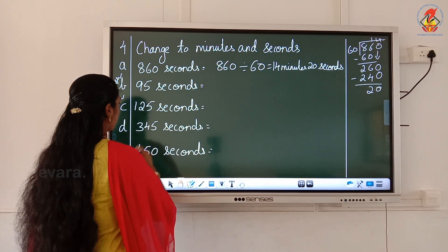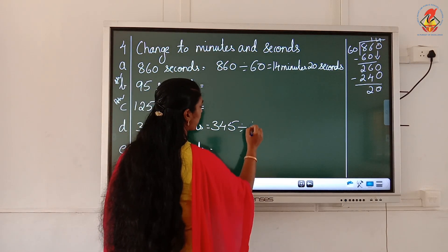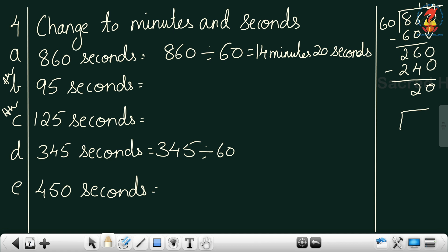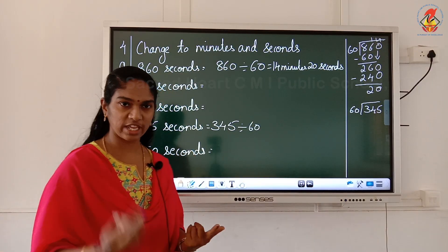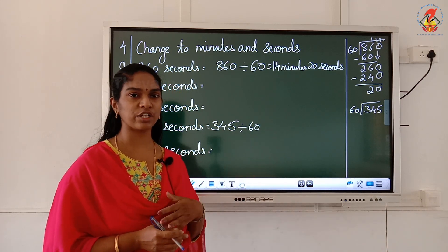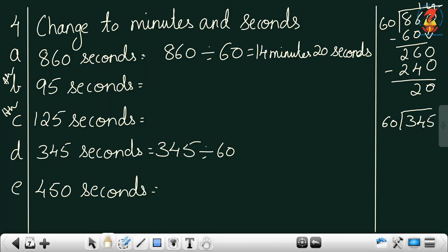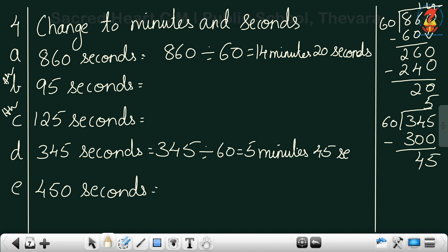Question D: 345 seconds, convert to minutes. Divide by 60. Starting with 2 digits — 34 is smaller than 60, so take the third digit: 345. From the 6 times table, find a number less than 34: 6 fives are 30, so 60 into 5 is 300. Subtract — I get remainder 45. The answer is 5 minutes, 45 seconds.